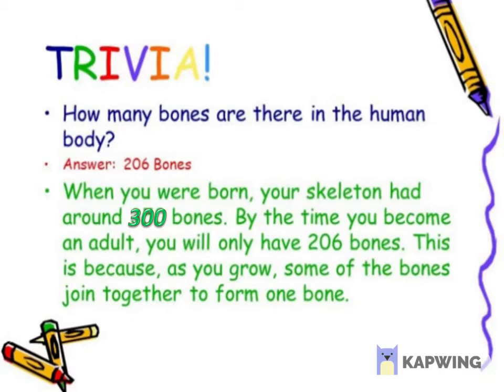There is one more point: when you are born, your skeleton had around 300 bones, or more than 300 bones. By the time you become an adult, you will have only 206 bones. This is because, as you grow, some of the bones join together to form one bone.